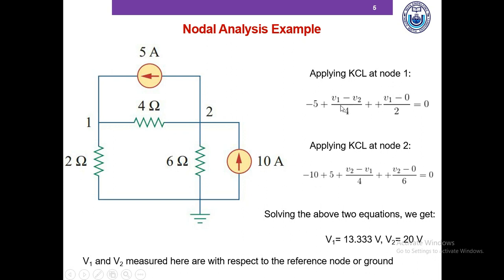There is our first equation. We have two unknowns, V1 and V2, so with one equation we cannot solve this — we need another equation from KCL at node 2. Note that at node 1, we have three branches connected, giving three terms in the equation. The bottom line is: if we have n branches connected to a node, we get n terms in our KCL, and each of those terms represents a current. Make sure you don't add current plus voltage — you can only add similar quantities.